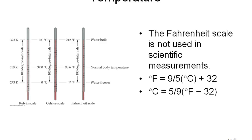Fahrenheit scale, even though widely used in the United States, is not used in scientific measurements. If you need to convert: °F = (9/5 × °C) + 32. To convert Fahrenheit to Celsius: °C = 5/9 × (°F − 32). Key reference points: 32°F is the freezing point of water, 98.6°F is normal body temperature, and 212°F is the boiling point of water.